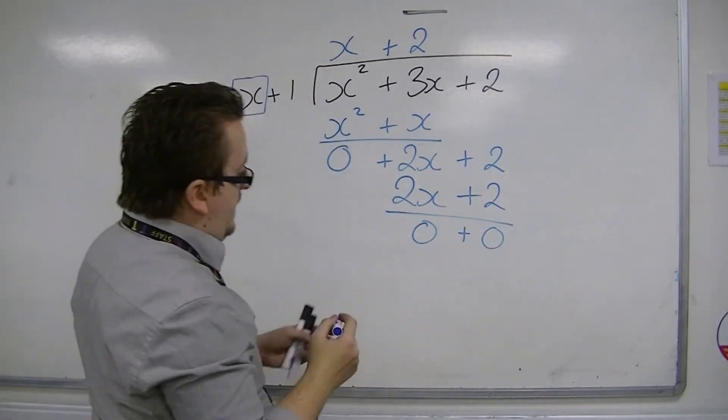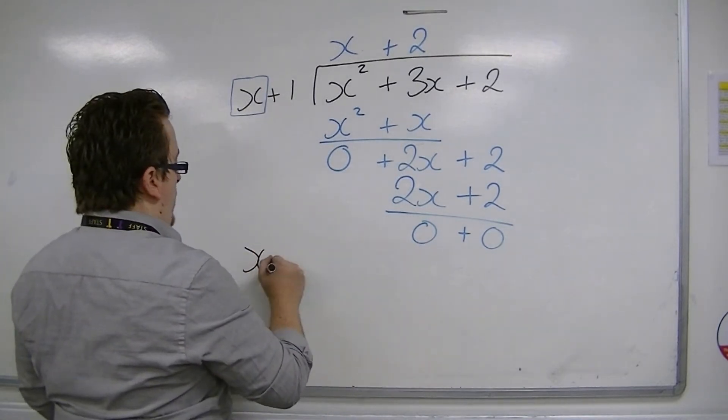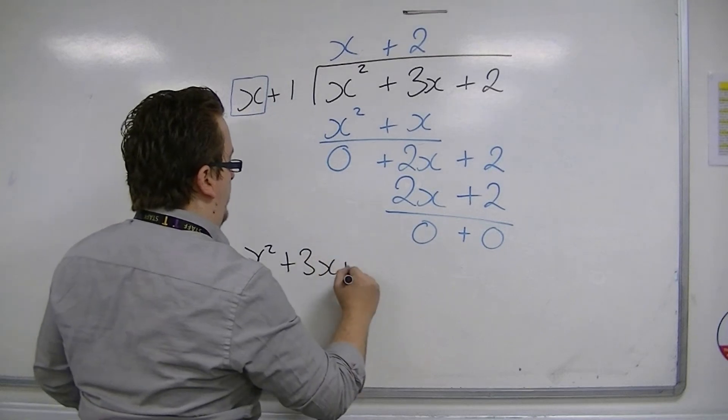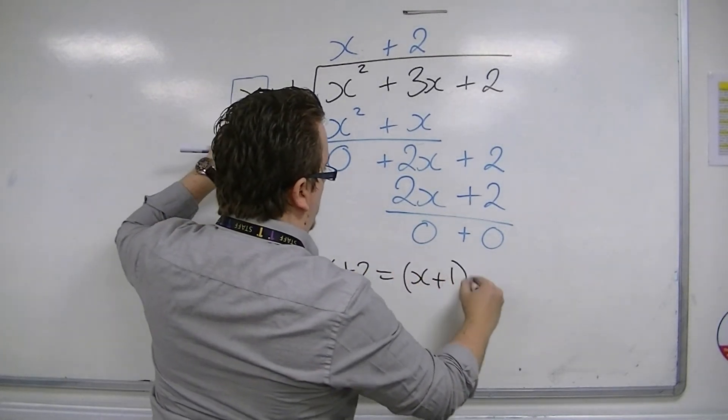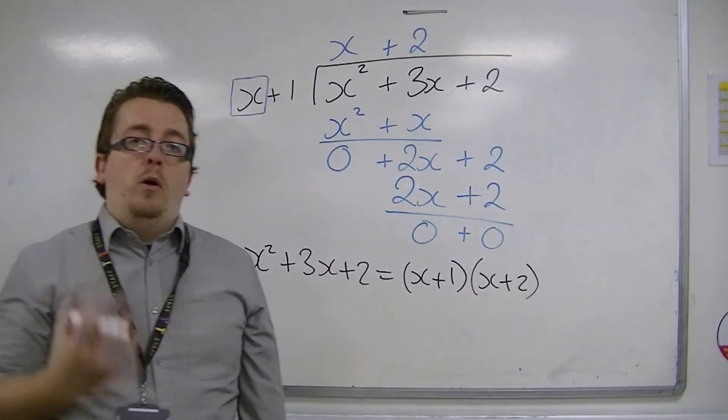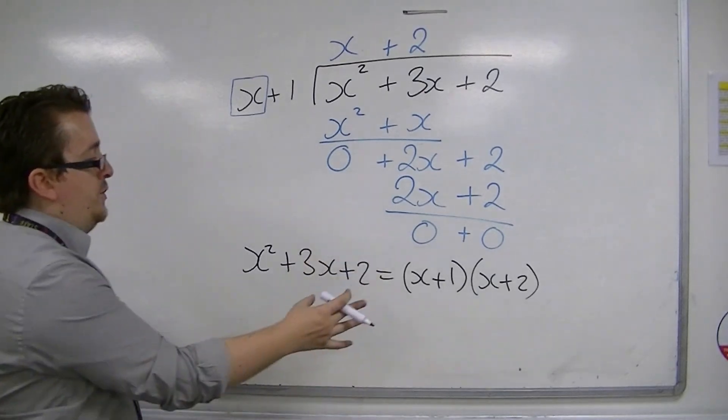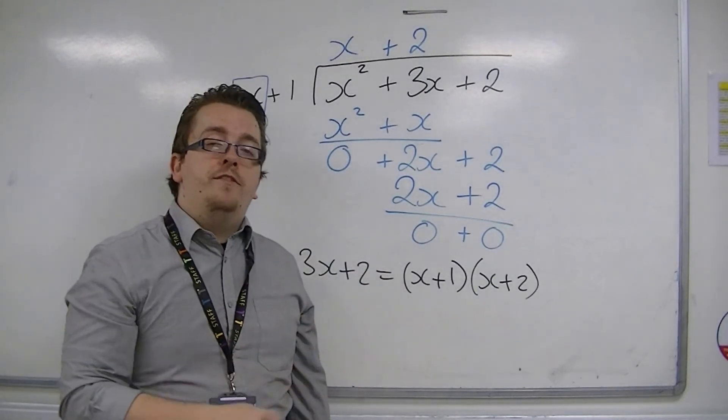So that then allows us to write x squared plus 3x plus 2 is x plus 1 times x plus 2. So you can use polynomial division to factorise a quadratic like this, if you know one of the factors.